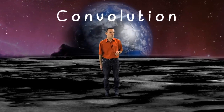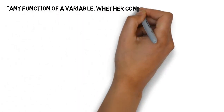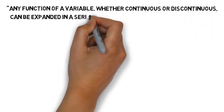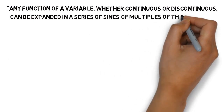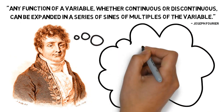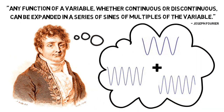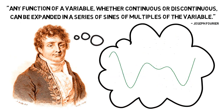Before we start to talk about convolution, let's first remind ourselves of what Fourier said about signals, or as he called them, functions. Any function of a variable, whether continuous or discontinuous, can be expanded in a series of sines of multiples of the variable. In other words, Fourier saw any signal as a lot of sine waves, each with its own frequency, phase and amplitude, all added together.